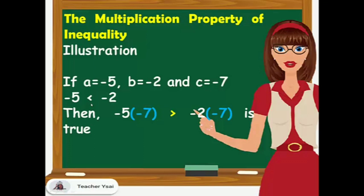Negative 5 times negative 7 is 35, and negative 2 times negative 7 is 14, and 35 is greater than 14.